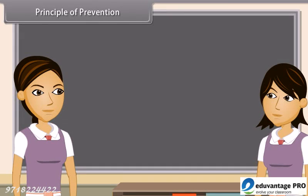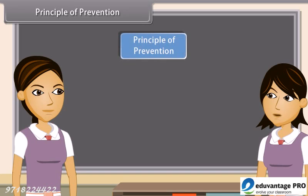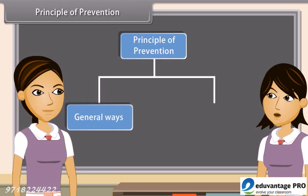Principles of Prevention — Similarly, there are two broad methods of prevention of disease: general ways and specific ways.